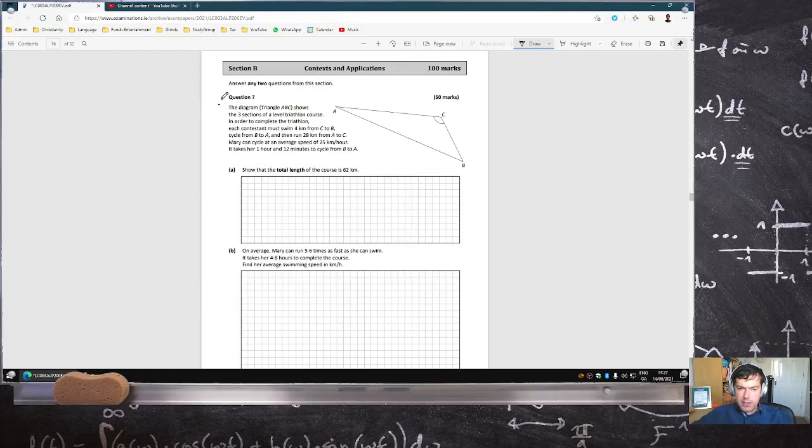Okay, diagram, triangle A, B, C. There is a triathlon. Each contestant must swim 4 km from C to B, then cycle B to A, and then run 28 km from A to C.